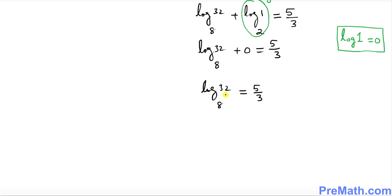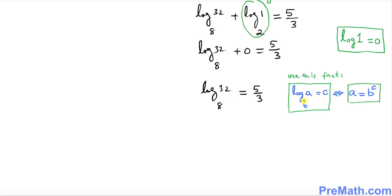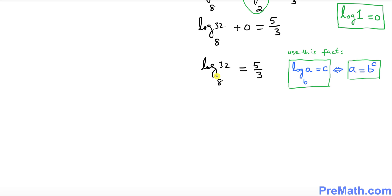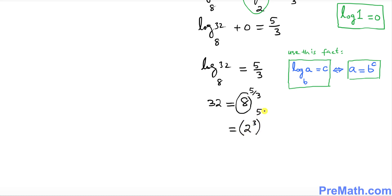We convert this logarithmic equation to an exponential one using the conversion rule. This gives 32 equals 8 to the power 5 over 3. Now 8 can be written as 2^3, so we have 32 equals (2^3)^(5/3). We now have two exponents, 3 and 5/3.